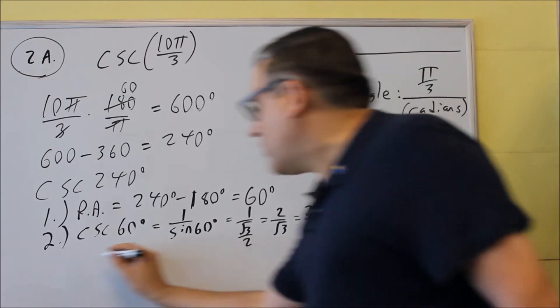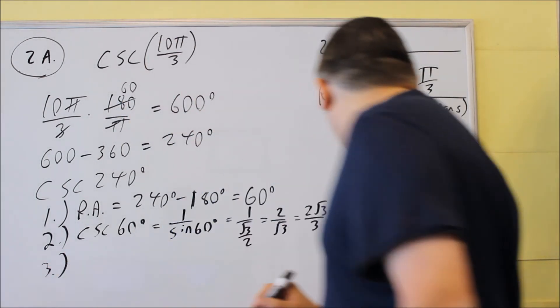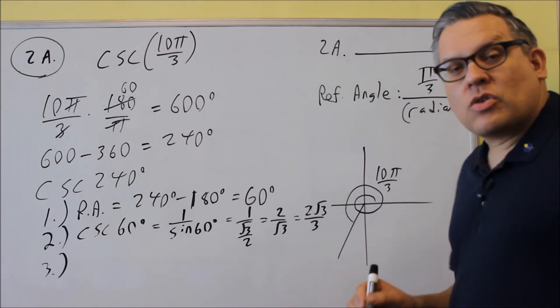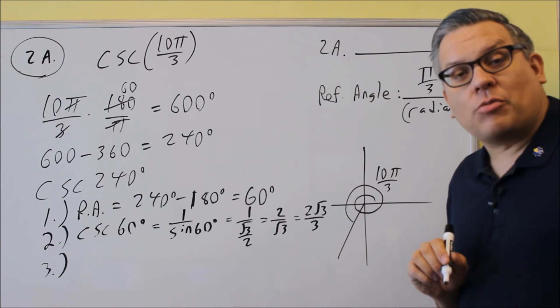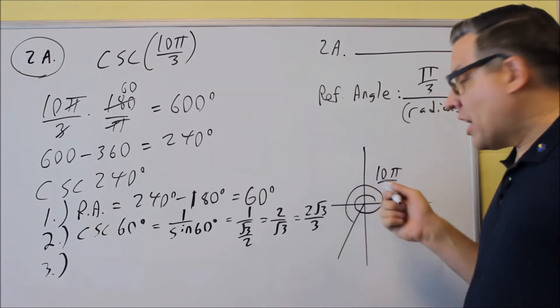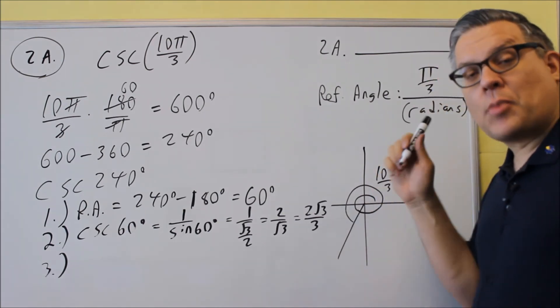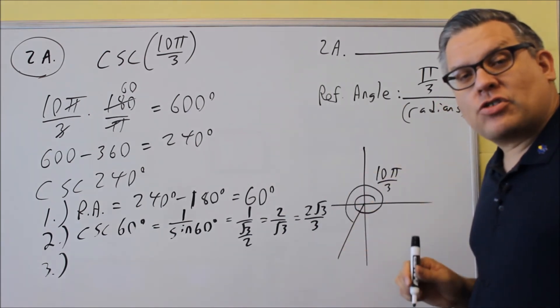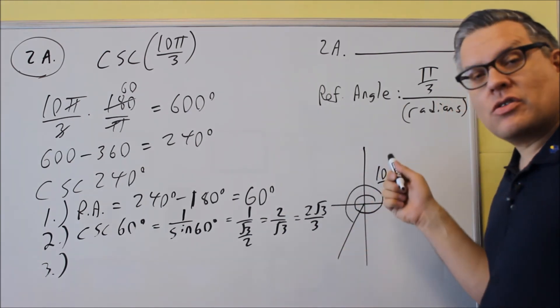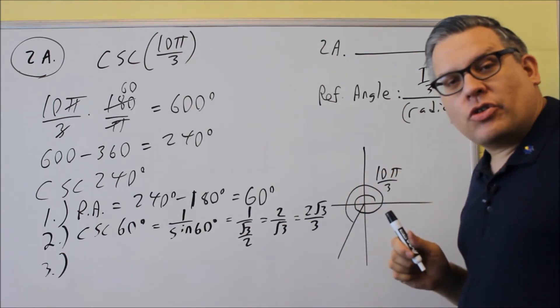Now the very last step we have to do, step 3, is to apply the appropriate sign. So we have to use that all students take calculus sign chart, and that's something else you want to be familiar with. So that just tells you which, if you remember all students take calculus, that's a way you can remember what is positive in each of the quadrants. So all means everything is positive in the first quadrant.